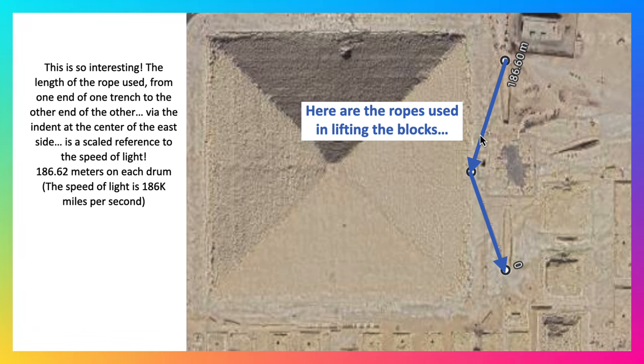186,000 meters on each drum, and the speed of light is 186,000 miles per second. Wow, interesting, but there's more.